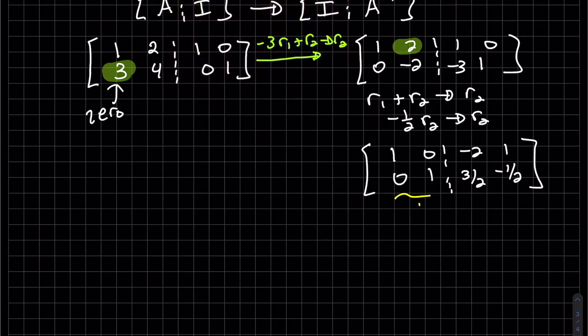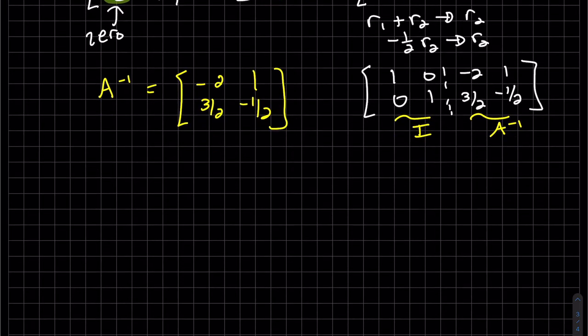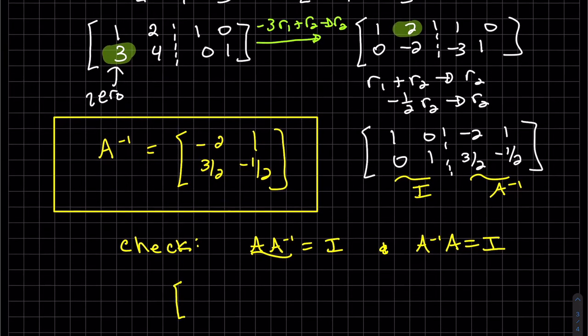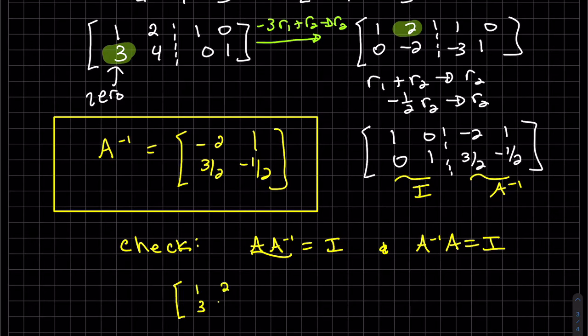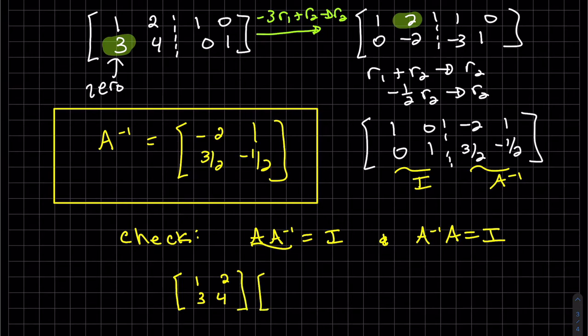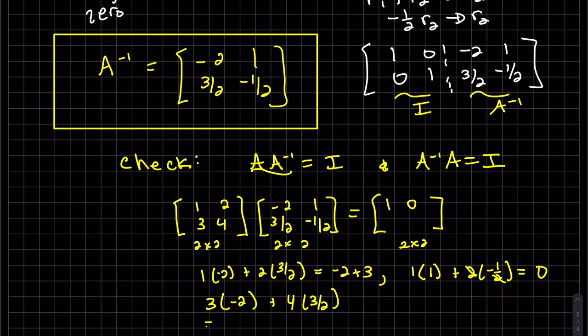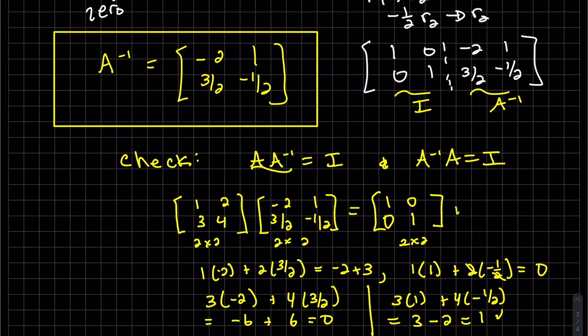So we see here, this is I. So this is A inverse. We still can check. And we can check. I'm not going to check both. I'm just going to check one of them. Yep, it works.